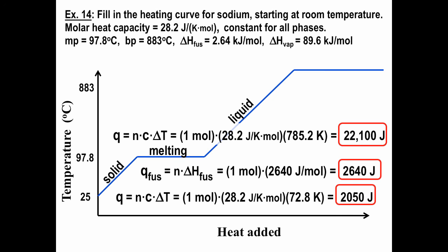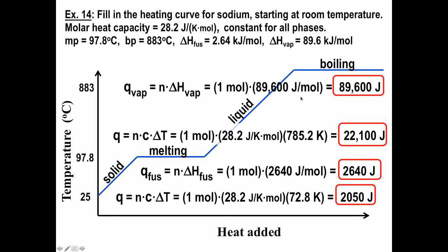And then if we keep on going, once we hit 883 degrees Celsius, then the liquid will boil and the heat of vaporization will be the number of moles times the delta H of vaporization, which is 1 mole times 89.6 kilojoules per mole, which is 89,600 joules per mole. That works out to be 89,000 joules. We could then keep going, add more heat, and increase the temperature of sodium vapor. But basically, here are the amounts of energy required for each step. If we wanted the total, we could just add all that up. So that's it for this screencast.